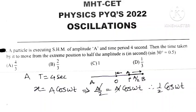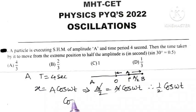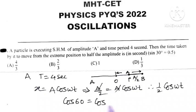Now, cos of which angle has value 1 by 2? Cos 60 means cos pi by 3 is equal to 1 by 2.